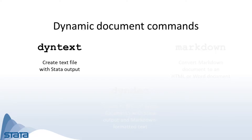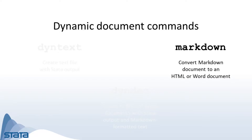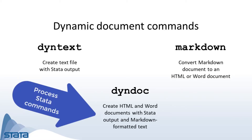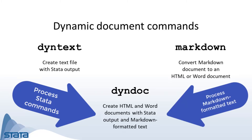If you want to embed Stata output in a text file, you would use the dyntext command and specify the plain text file. Or if you simply want to convert a markdown document to an HTML file or a Word document, you would use the markdown command. But if you want to combine Stata output and markdown text in your document, you can use the dyndoc command to create HTML and Word documents. This command calls on dyntext to process the Stata commands and it calls on markdown to process the markdown-formatted text.